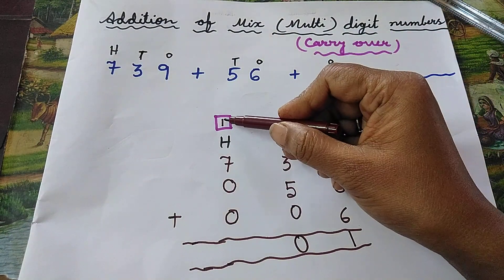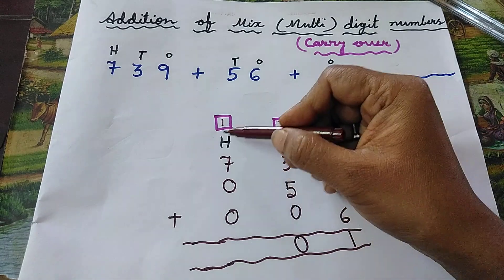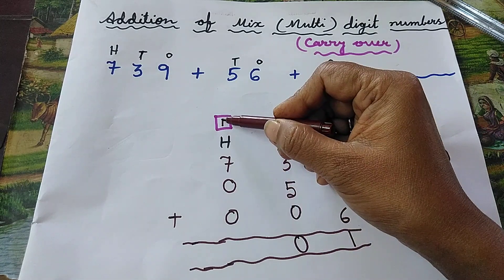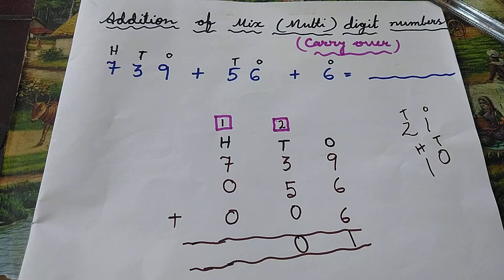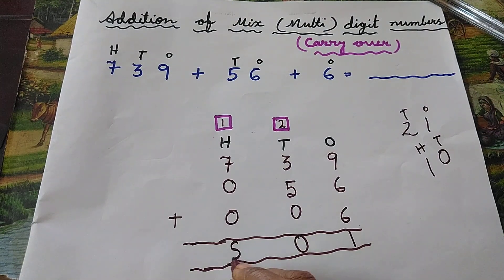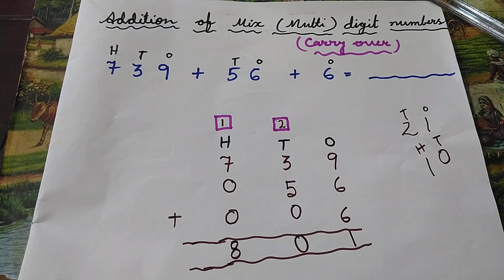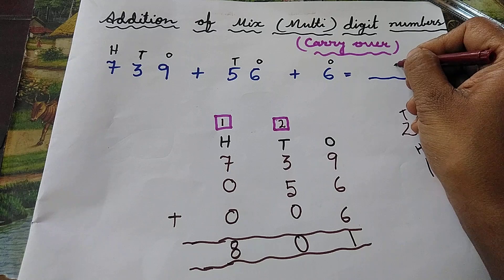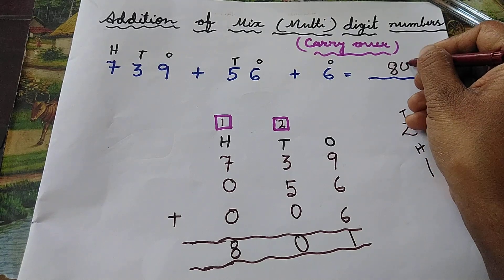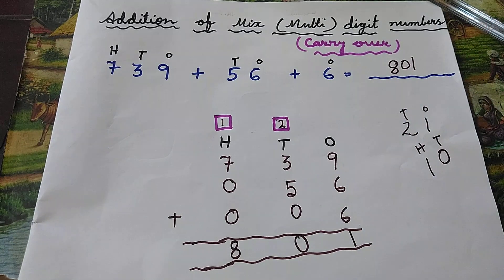Now add all the digits in the hundreds place: one plus seven plus zero plus zero is equal to eight. So the answer is eight hundred and one. Practice this, children. Thank you.